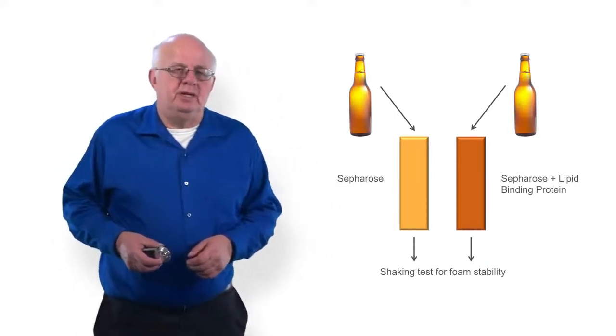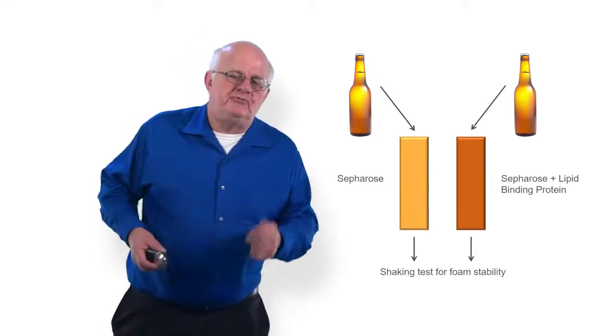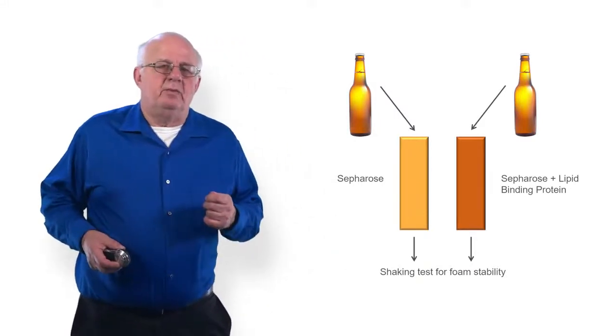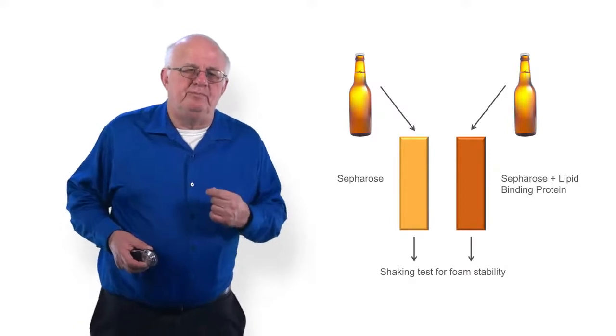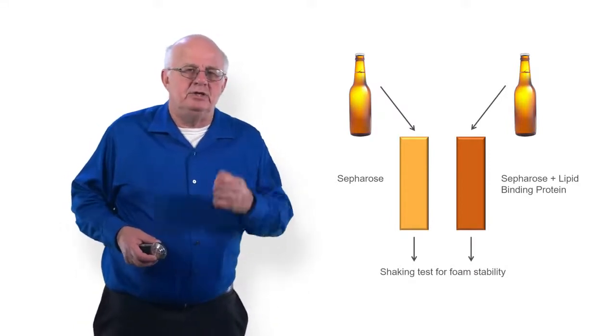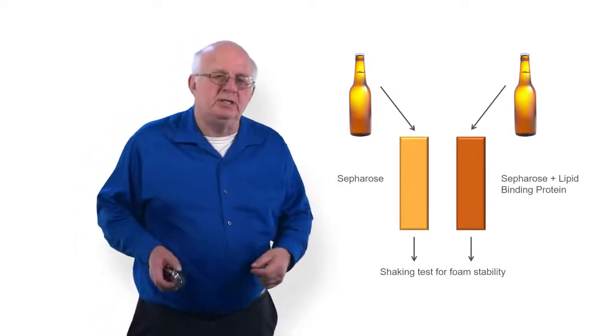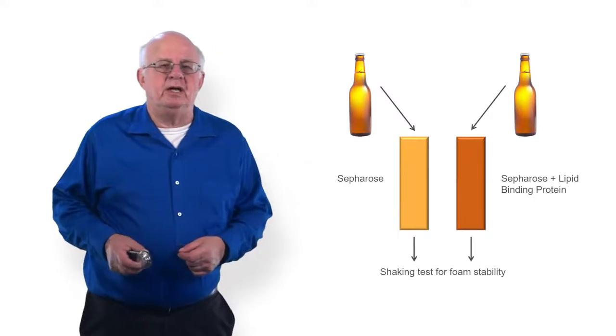And the foam stability will be higher. So if you increase the foam stability by the use of the BSA, the lipid binding protein, that means that there is foam negative material in the beer. Let me illustrate that with some real life examples.